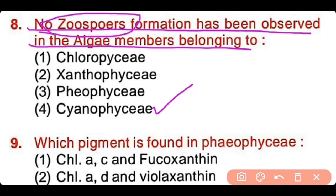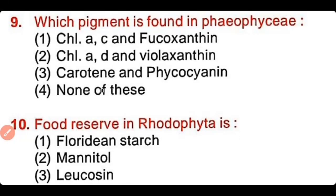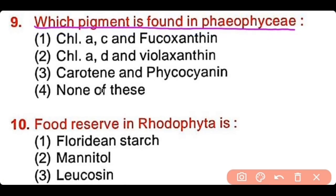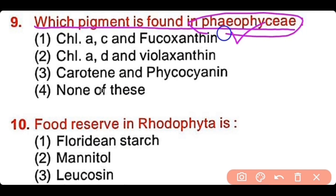Zoospores are involved in asexual reproduction and they are formed in favorable conditions. Question number 9: Which pigment is found in phaeophyceae? Chlorophyll A, C, and fucoxanthin; chlorophyll A, D, and violaxanthin; carotene and phycocyanin; or none of the above? The correct answer is option 1. Chlorophyll A, C, and fucoxanthin are present in phaeophyceae, also known as brown algae.